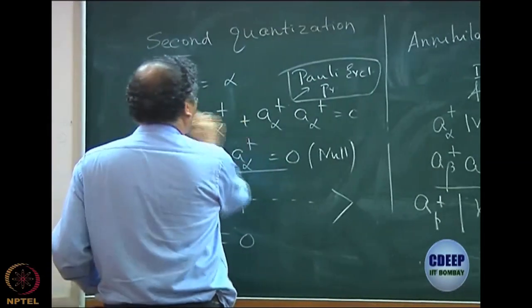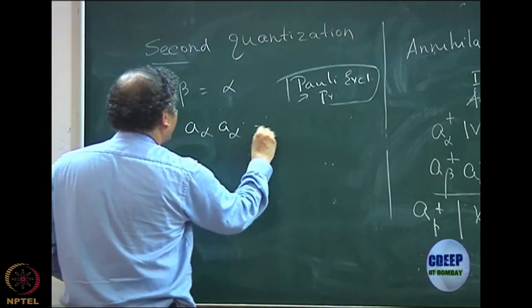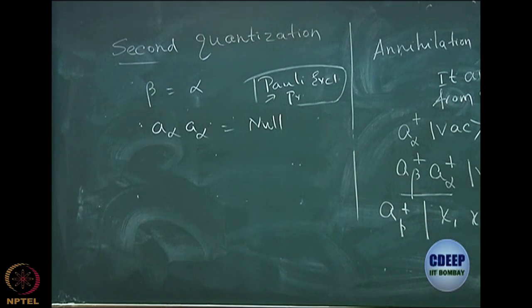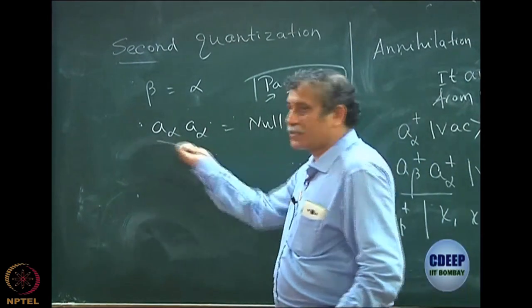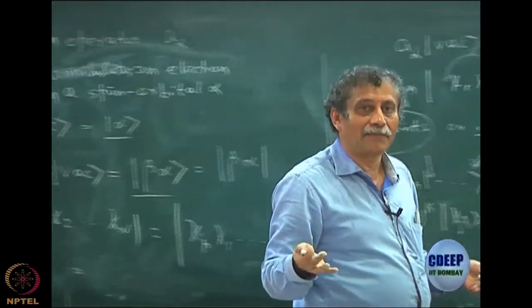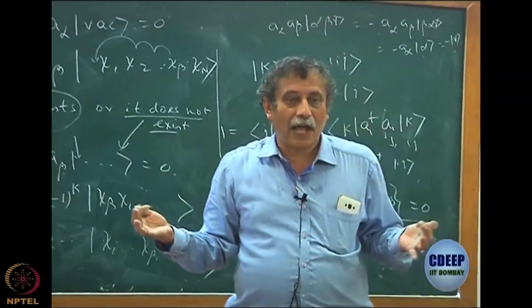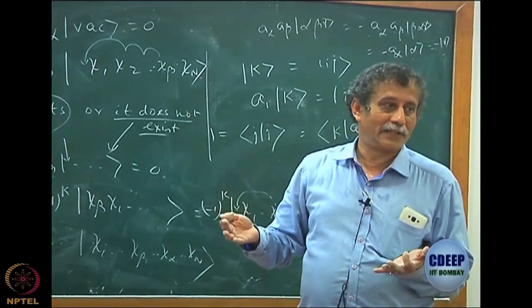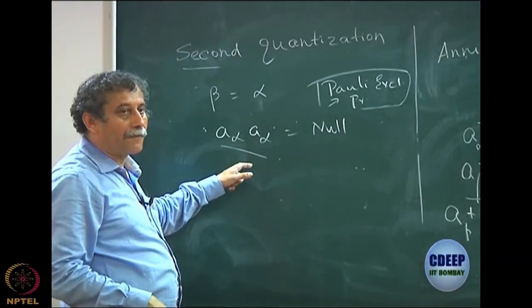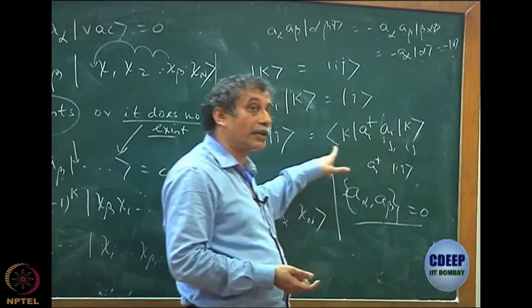Hence, if beta equals alpha, we have a_α a_α as a null operator. What does it mean? If I have destroyed alpha once from somewhere, I cannot destroy it again — just as you cannot create a second time, you cannot annihilate a second time. It is a very important physical meaning: I cannot destroy unless I recreate. There must be a†_α before I allow a_α to act again.